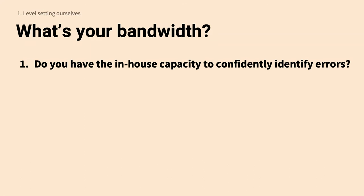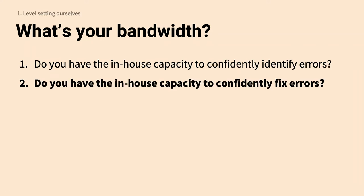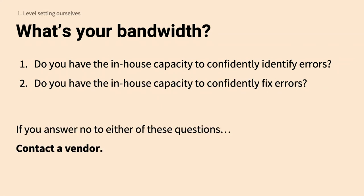You'll also want to figure out what your bandwidth is. Do you have the in-house capacity to confidently identify errors? Accessibility testing often asks you to evaluate things, and if you're unsure whether you're evaluating correctly, that can cause problems. Do you have the in-house capacity to confidently fix the errors? Maybe you have a skilled web developer in-house, but they're not sure about implementing a compliant solution. If you answer no to either of these questions, you'll likely want to contact a vendor.